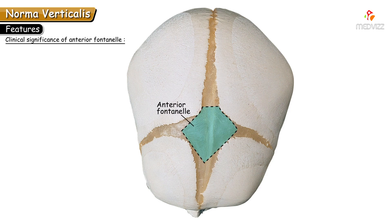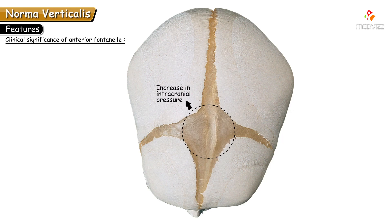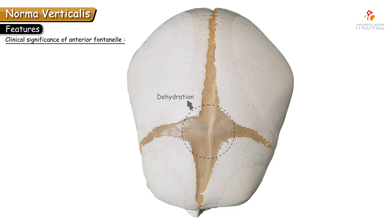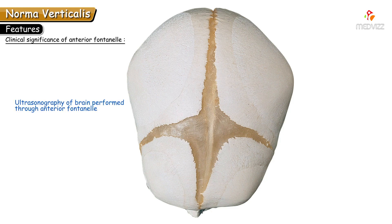The anterior fontanelle is the largest and closes last. Abnormal outward bulging of the anterior fontanelle indicates increased intracranial pressure, which may be due to excess accumulation of CSF or various other reasons. Abnormal depression indicates dehydration. Ultrasonography of the brain in infants is performed through the anterior fontanelle, as it is a soft spot providing an acoustic window for the radiologist.